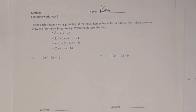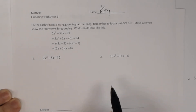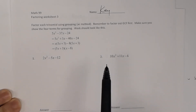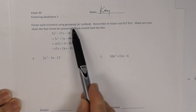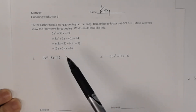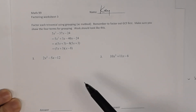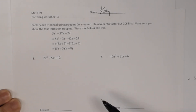This is the key to factoring worksheet number 3. In these problems you want to factor by grouping, using the AC method. You want to change each three-term expression to four terms so you can use grouping. I need for you to work it just like I did the example I provided, so you'll know how to show the work and get full credit.